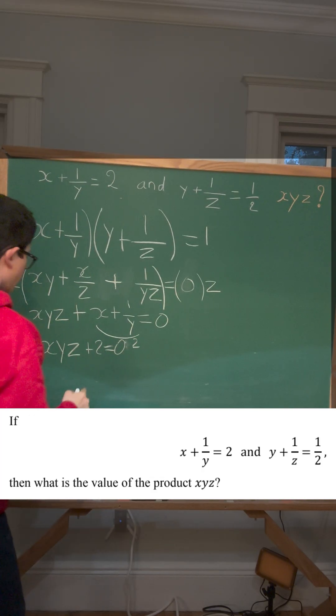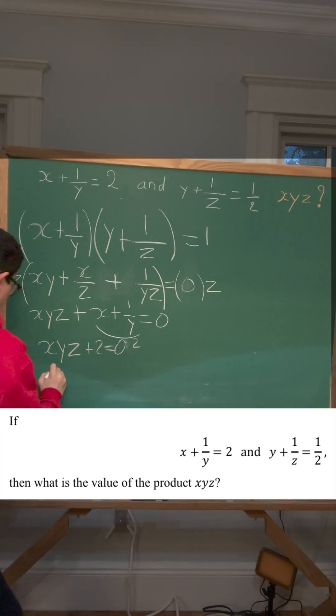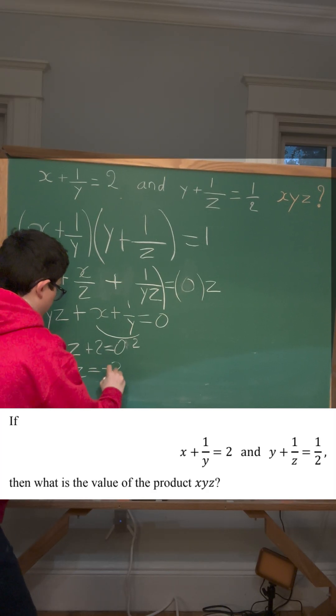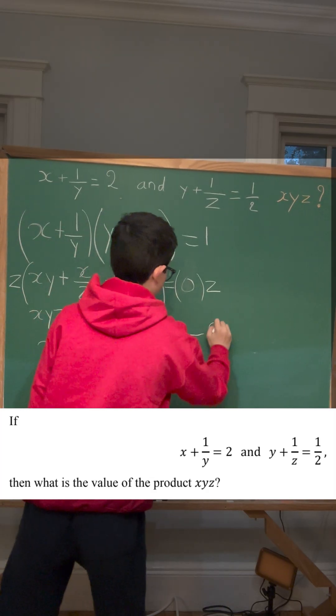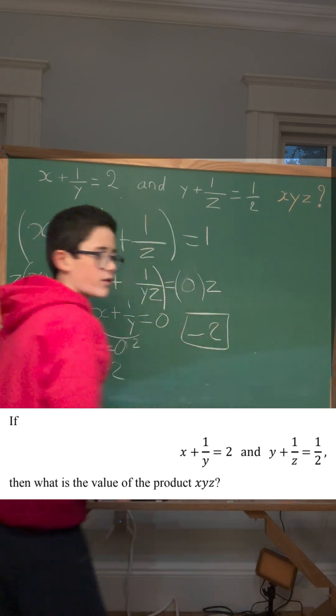We can minus 2 on both sides of this equation to get that xyz equals negative 2. Negative 2 will be your final answer.